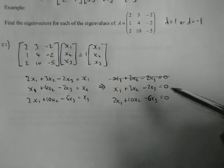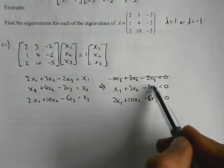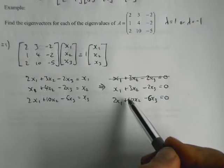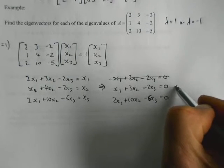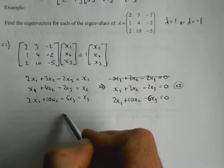And now we can try and sort out what's going on down here. So you can do it any way you like, but I'd suggest if we multiply this one by 3, then we'll make the x3s match. And we can eliminate them and turn it just into an equation with x1s and x2s.